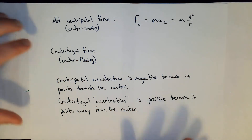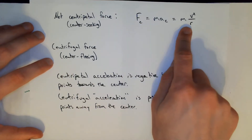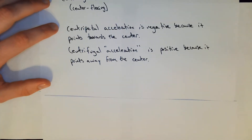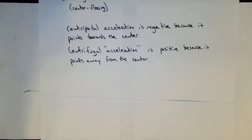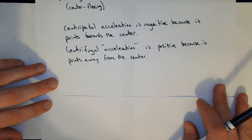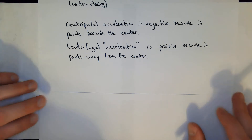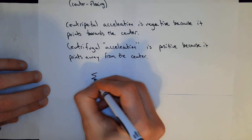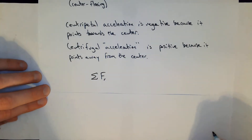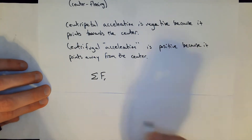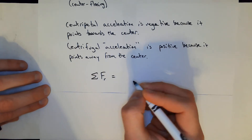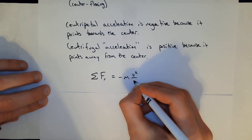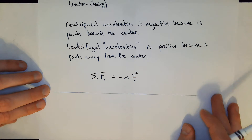Now that we have this sign convention and the definition of centripetal force, we can define the sum of the forces in the radial direction. Just like we had the sum of forces in the x direction equals ma, that force diagram approach applies here. The sum of the forces in the radial direction equals negative m times the centripetal acceleration — that is, the negative of the centripetal force, ignoring centrifugal force.